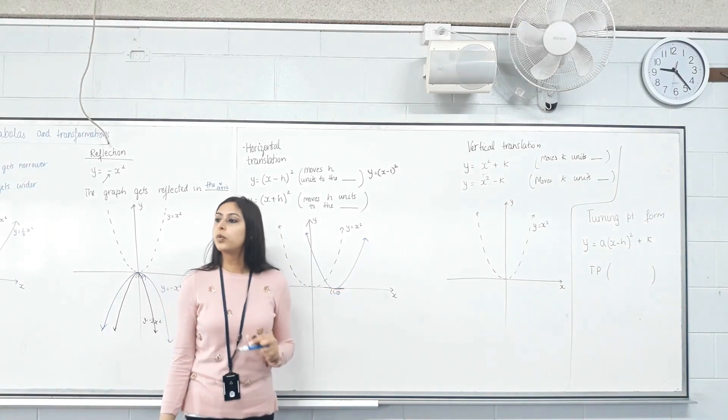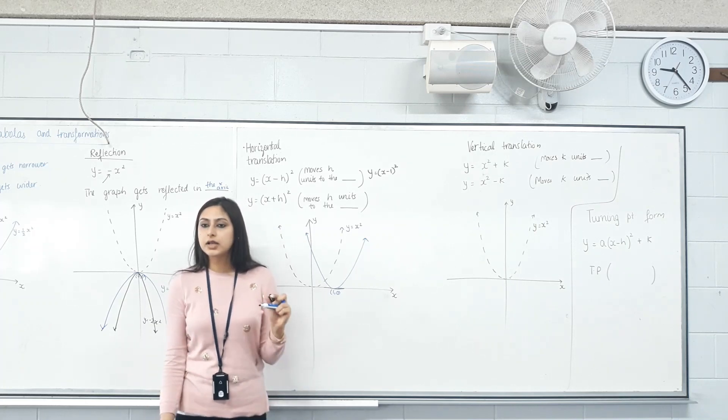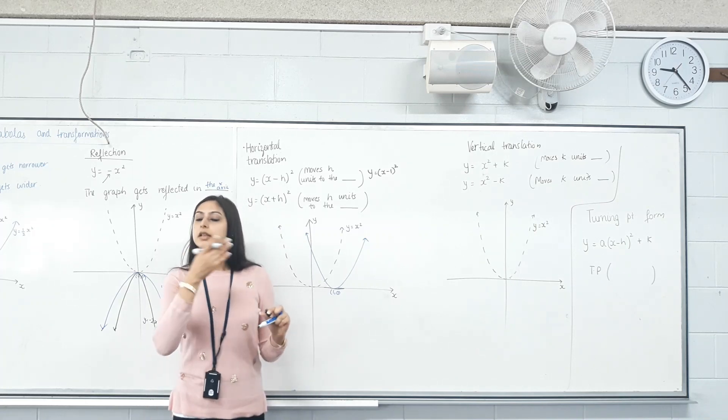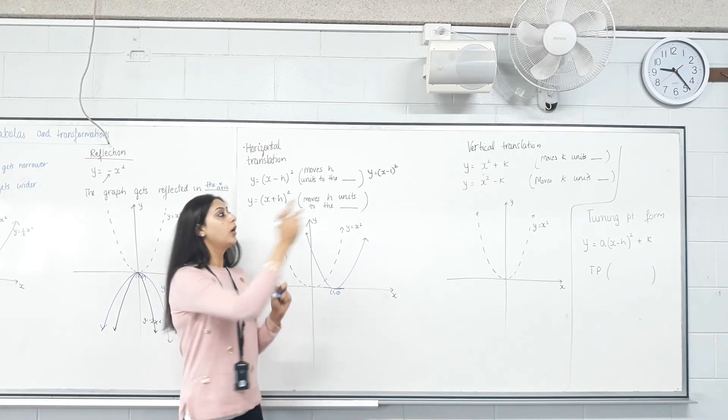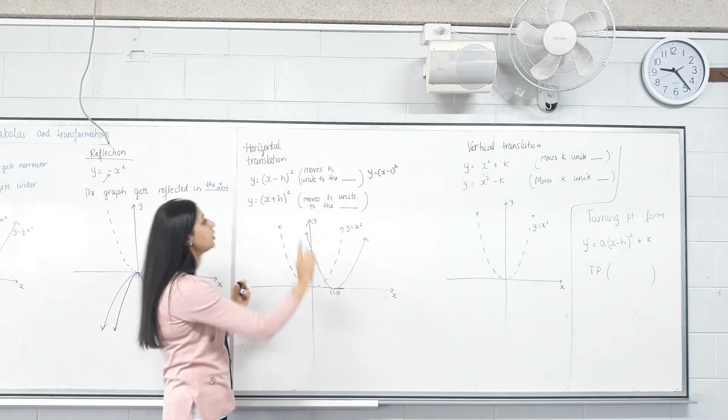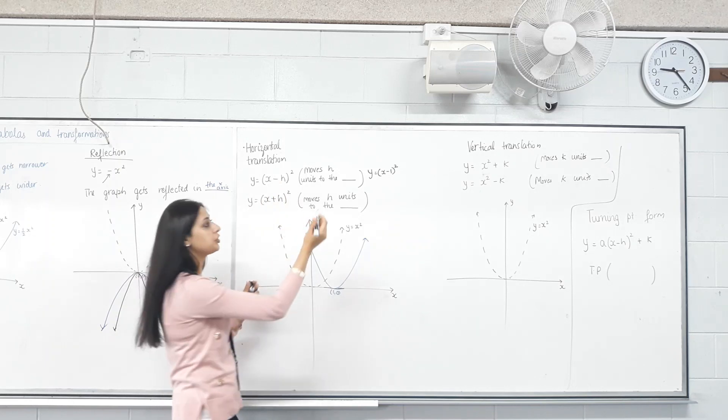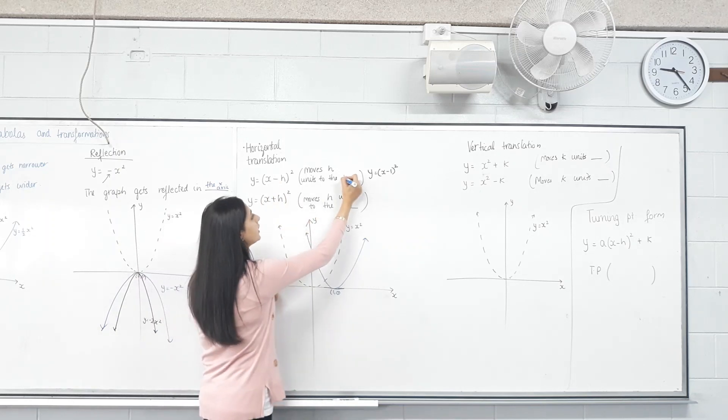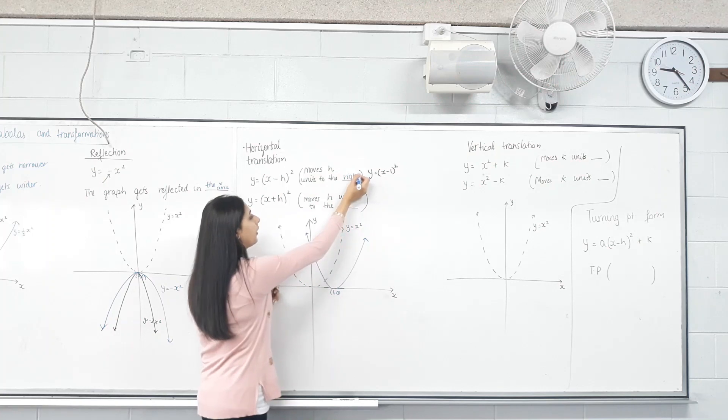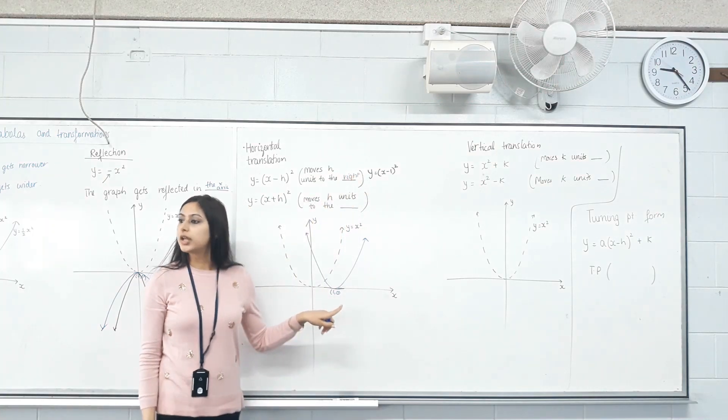This is what the CAS did. By subtracting 1 and then squaring it, the graph shifted one unit to the right. So if I had x minus h, how many units will it shift to the right? h units. So if it's subtracting, it shifts to the right. Does the turning point change? Yes.